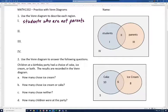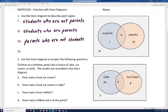Number two, well, that's the region that represents students who are parents. Region three, those are the parents who are not students. And finally, region four, these are people who are not students or parents.